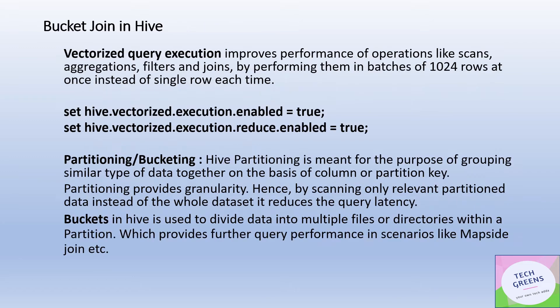The third option for optimized query performance is vectorized query execution. To enable vectorization, set these two properties to true: hive.vectorize.execution.enable and hive.vectorize.execution.reduce.enable. Vectorization performs heavy operations like scans, aggregations, joins, and filters in batches of 1024 rows at a time, instead of processing a single row at a time. The default batch size is 1024 rows, and it is recommended when running heavy operations like aggregations and joins.